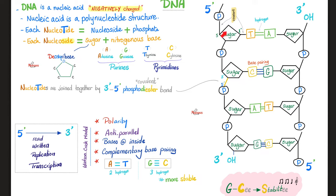DNA is the classic anti-parallel structure. The nucleotide is made of three components: sugar, phosphate, and nitrogenous bases. Complementary base pairing: A binds with T and G binds with C. A-T requires two hydrogen bonds; G-C requires three, which is why GC is more stable. Mnemonic: GC — stability.